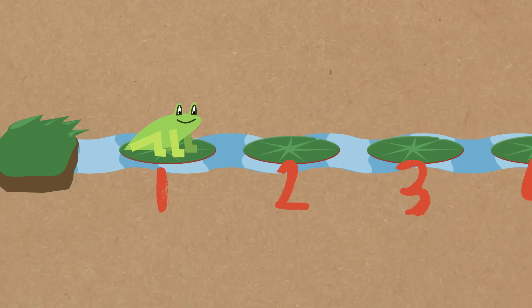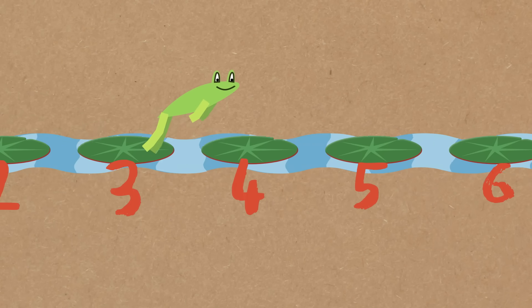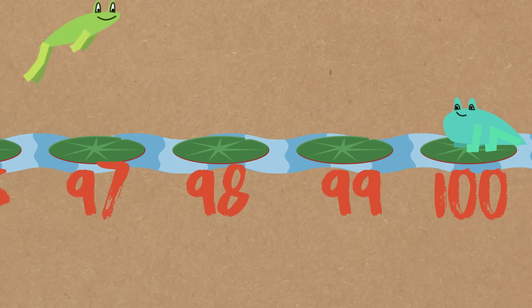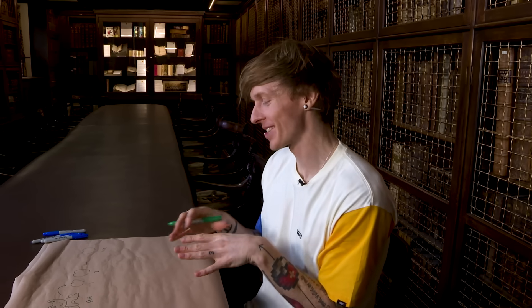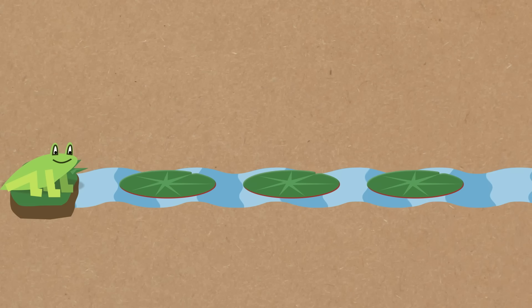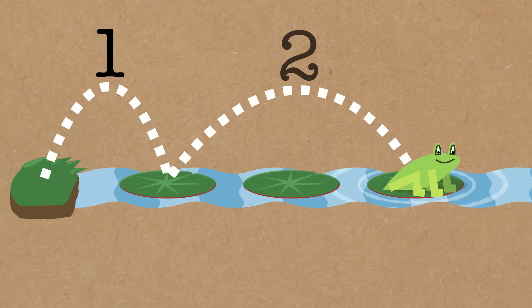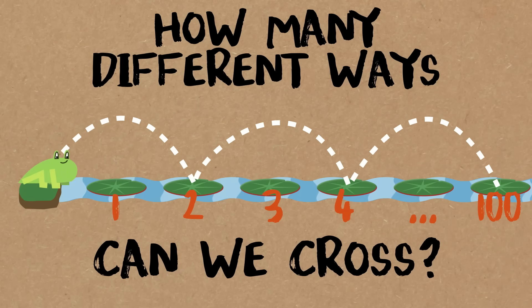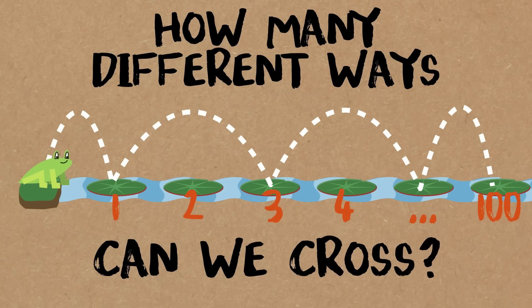We start on land and then we can move on to the first lily pad, the second lily pad, and we want to keep going. Our aim is to get to the hundredth lily pad. Maybe our fellow frog mate is waiting for us at lily pad 100. We can only jump forwards.